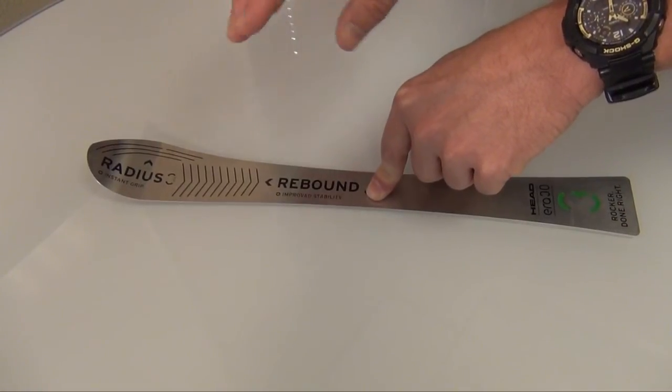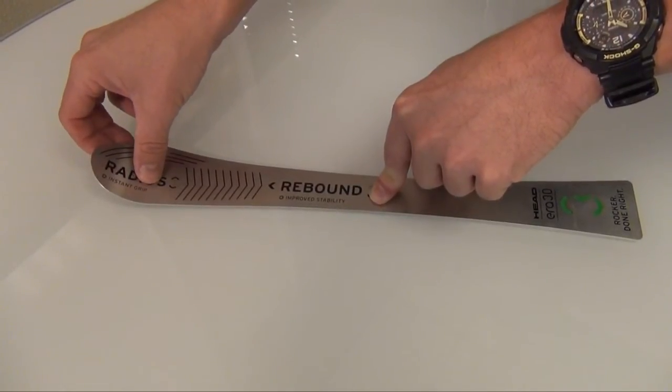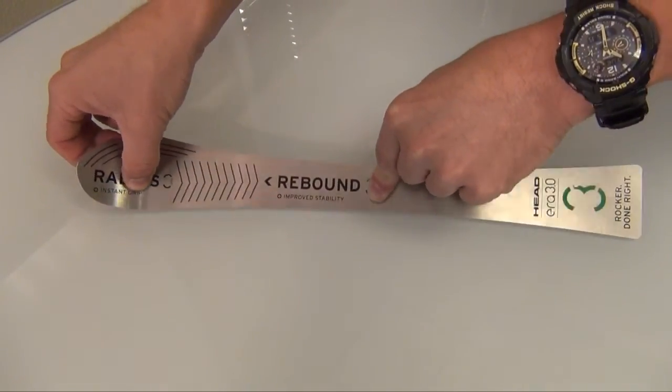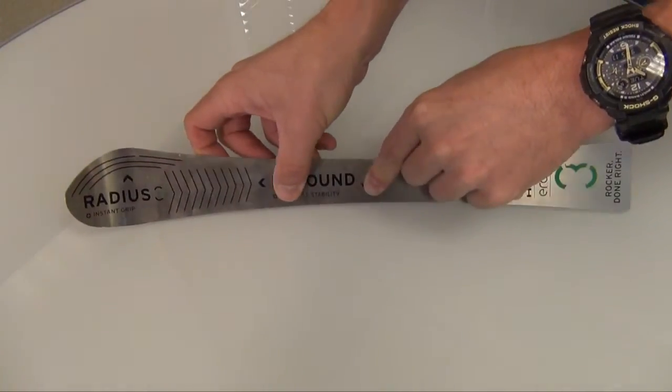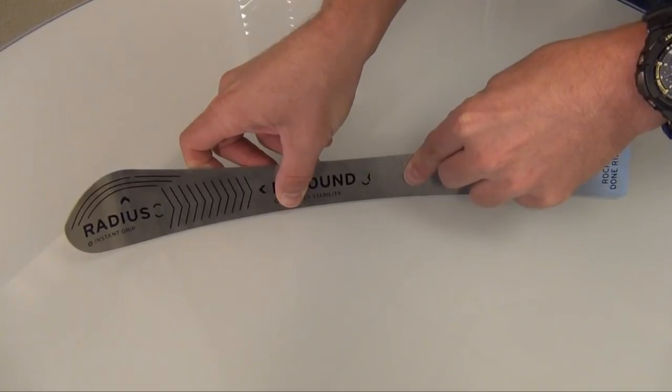It allows the ski to slide into the turn without hooking up. But when you incorporate that with regular radius, you have to reach a very aggressive angle to get the full edge contact of the ski.